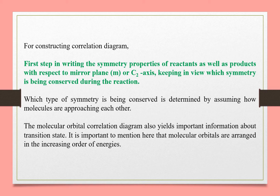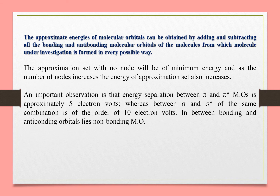The molecular orbital correlation diagram also yields important information about the transition state. It is important to mention that molecular orbitals are arranged in increasing order of energies. The approximate energies of molecular orbitals can be obtained by adding and subtracting all bonding and anti-bonding molecular orbitals of the constituent molecules in every possible way, and the possible combinations are arranged with respect to energy levels.